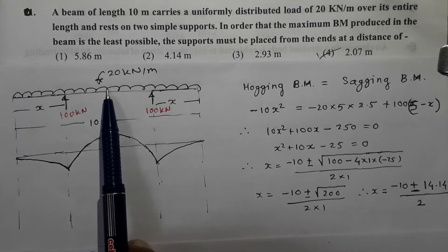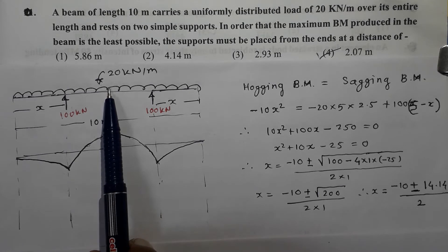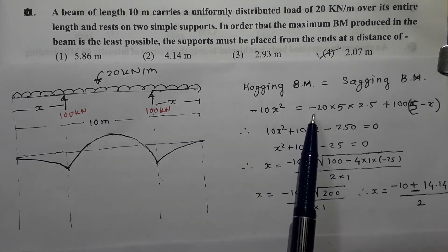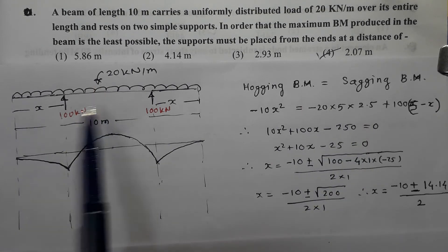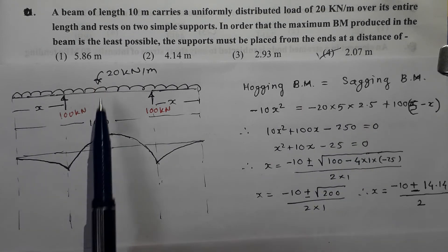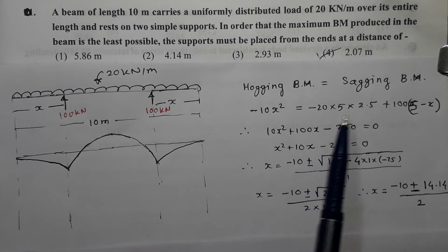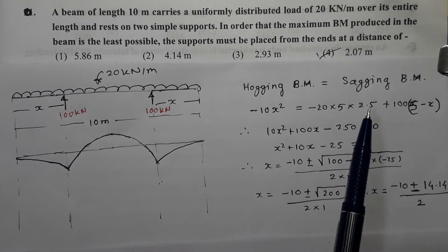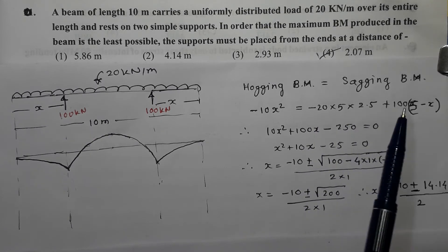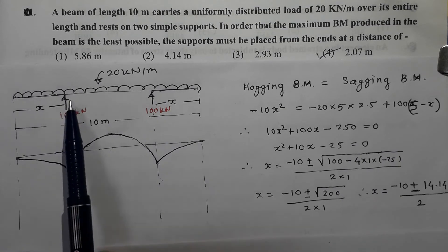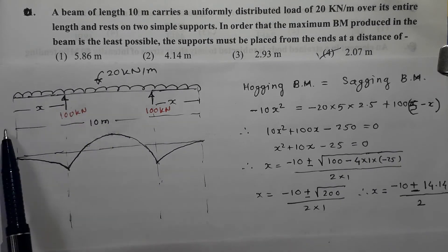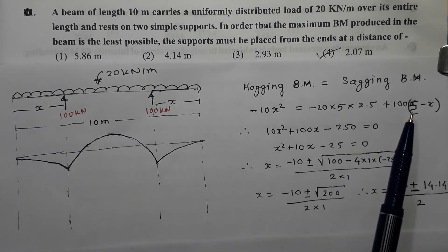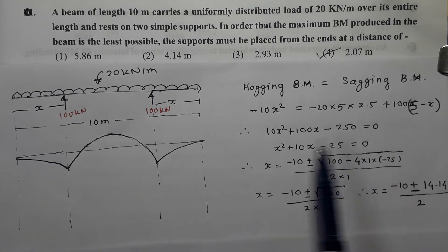Is it equal to the sagging bending moment? It is going to appear at the midpoint of the beam. Taking a section at the midpoint, the bending moment will be minus 20 × 5 × 2.5. So 5 meters is the distance of the midpoint, giving 20 × 5 × 2.5, which is anti-clockwise and therefore negative. Plus 100 into this distance, which will be 5 minus x.